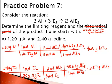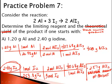So since this number is smaller, this is the maximum amount of product, which means that 2.40 grams of iodine is my limiting reactant.